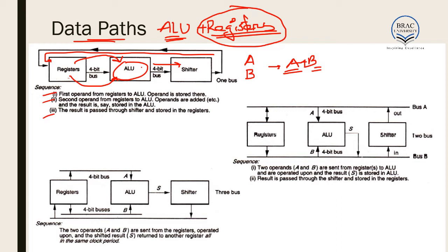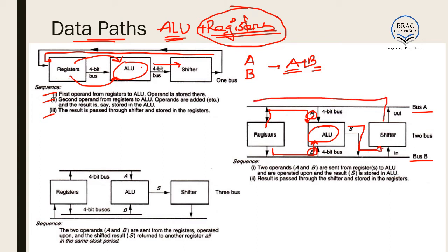We can reduce the clock cycles required by using two data buses — Bus A and Bus B. With two data buses, in a single clock cycle both the first and second operands can be sent simultaneously to the ALU. The ALU performs the operation in that same clock cycle, and then in the next clock cycle the result is passed through the shifter and stored in the register. The same operation now takes only two clock cycles.